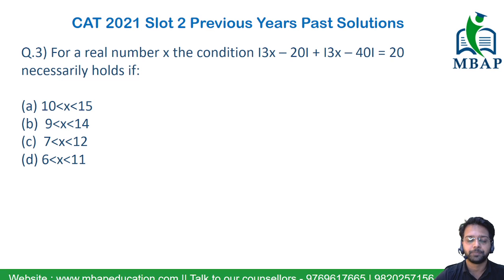Let's have a look at the next question. The question says, for a real number x in the condition that mod of 3x minus 20 plus mod of 3x minus 40 is equal to 20, which of the following range definitely holds correct?